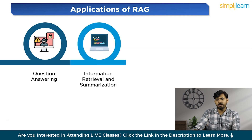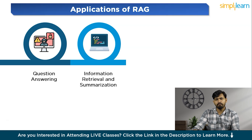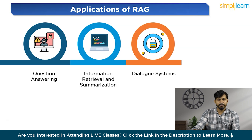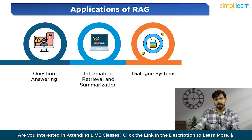RAG can also be used for information retrieval and summarization, where the goal is to extract and summarize relevant information from large volumes of text. By leveraging retrieval mechanisms, RAG can generate concise summaries or retrieve relevant documents based on user queries. Additionally, dialogue systems including chatbots and virtual assistants can benefit from RAG by incorporating external knowledge sources, retrieving relevant information from knowledge bases or previous interactions to provide more contextually relevant responses.